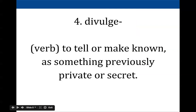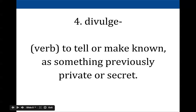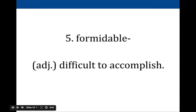Number four is divulge. To divulge something is to tell something or make something known that was previously a secret. Here's an example of one friend divulging some information to her girlfriend — clearly it's a secret because they're very close and it's on the sly that this information is being passed. She's telling or making known something that was previously unknown or private.